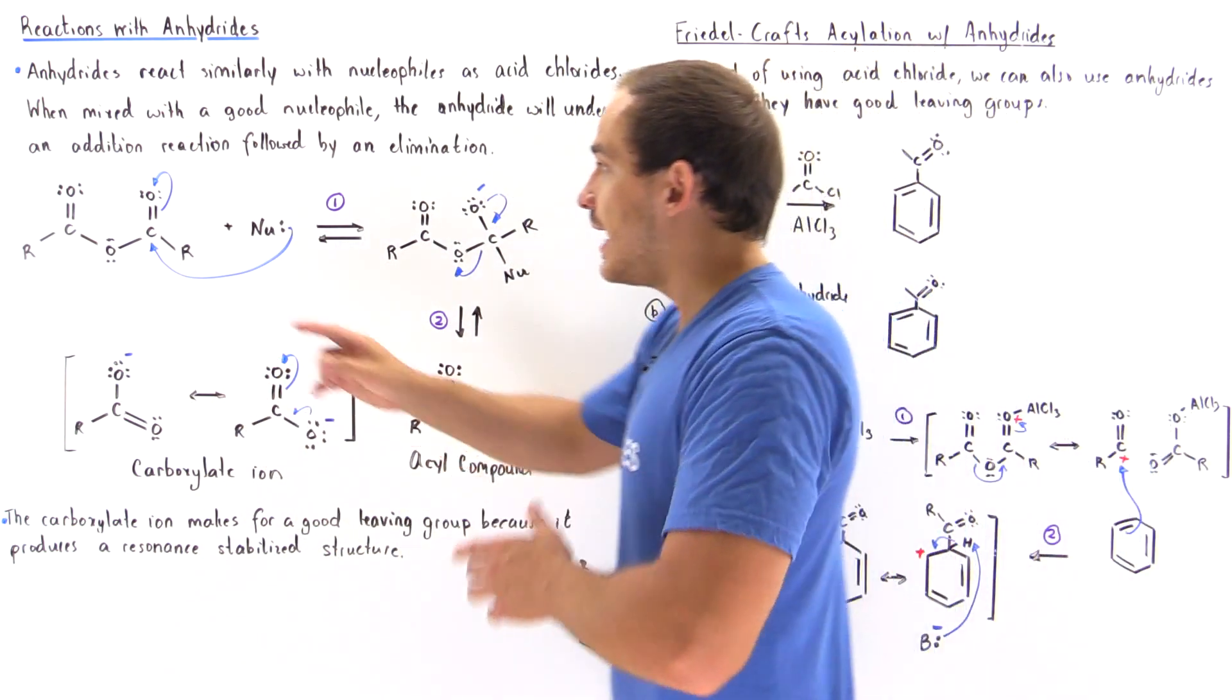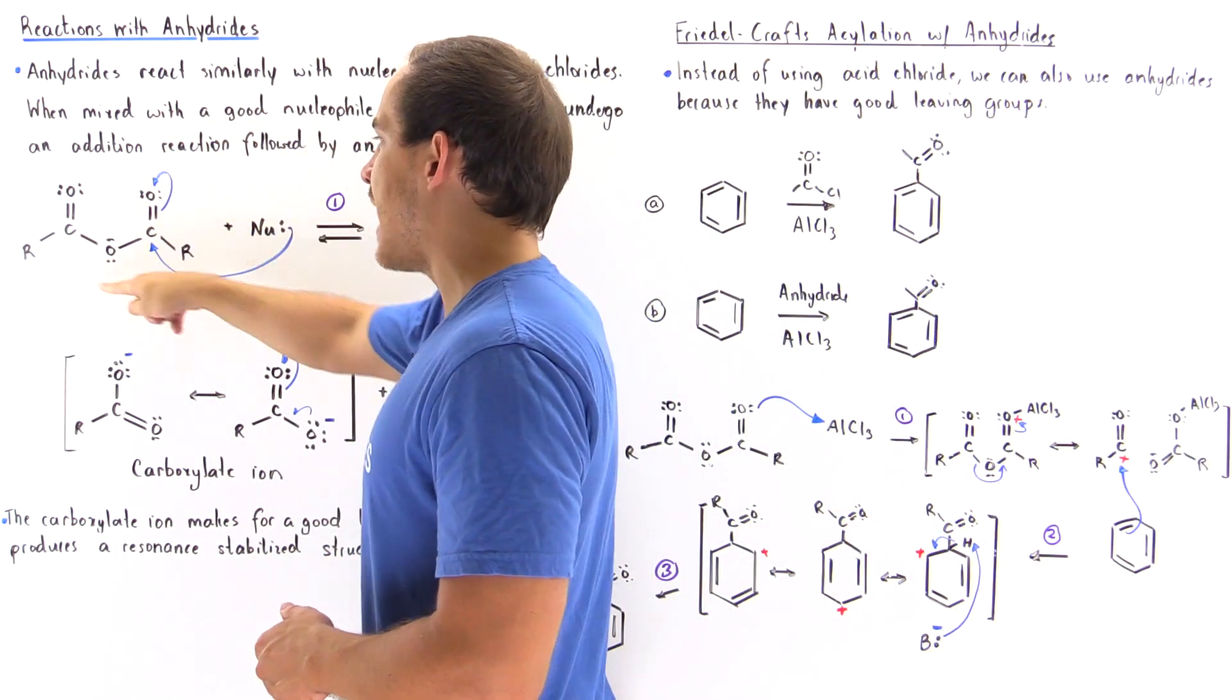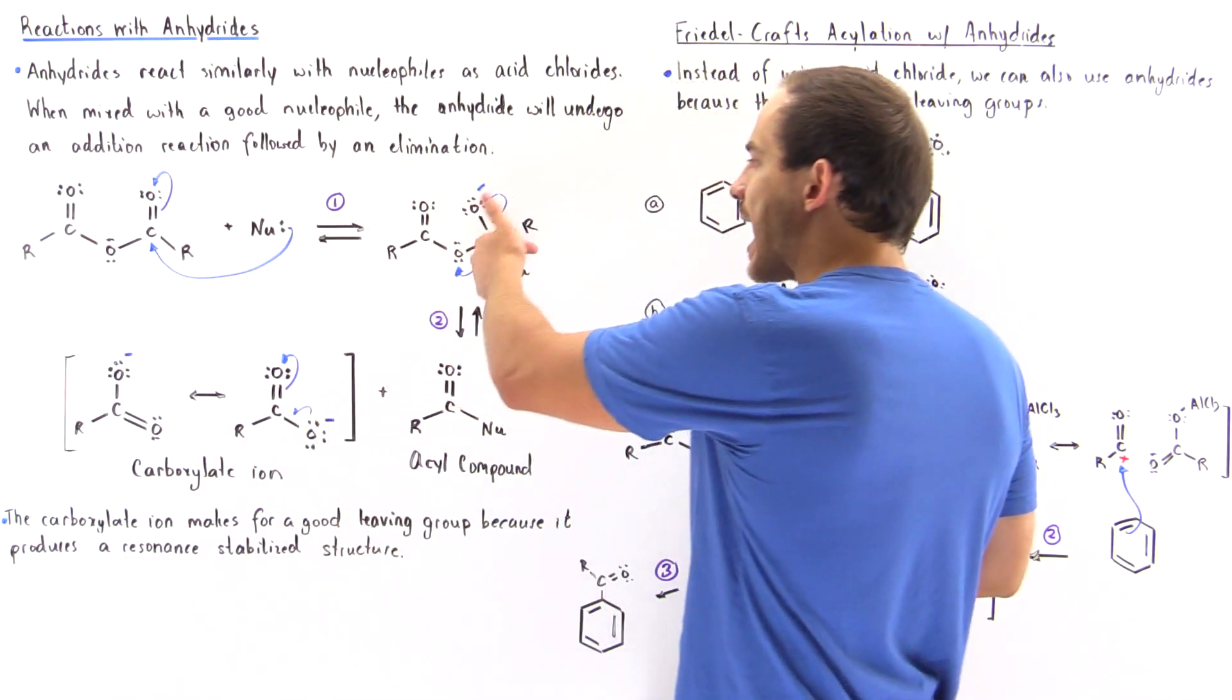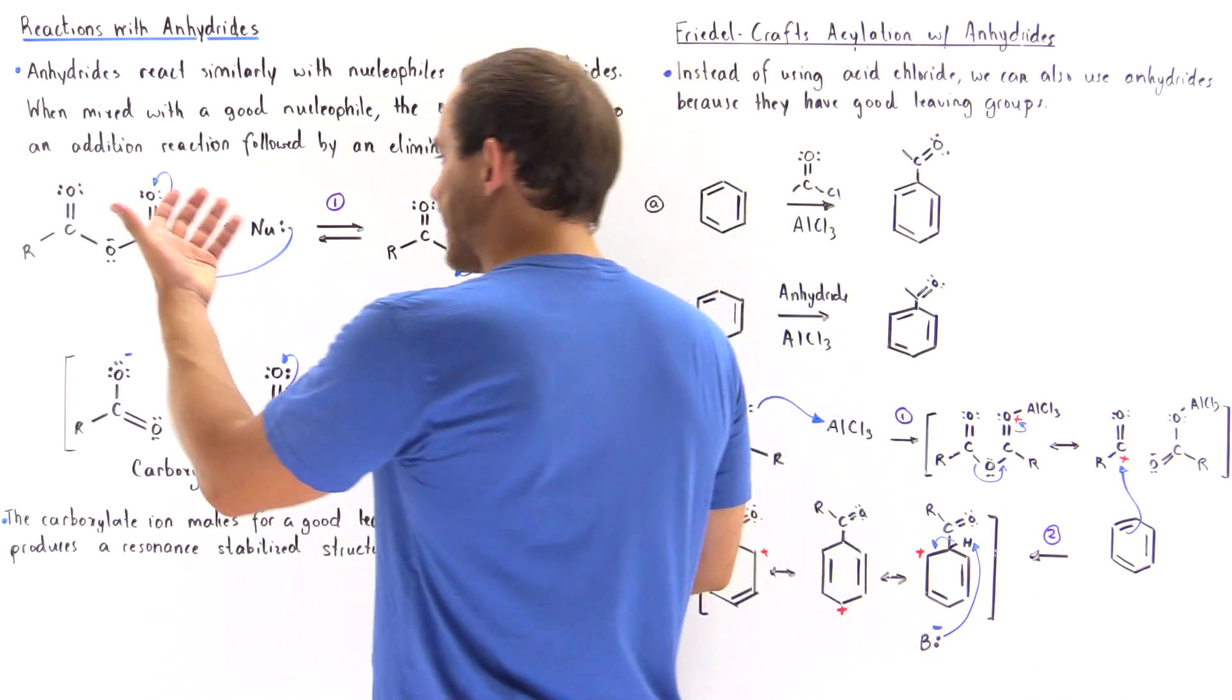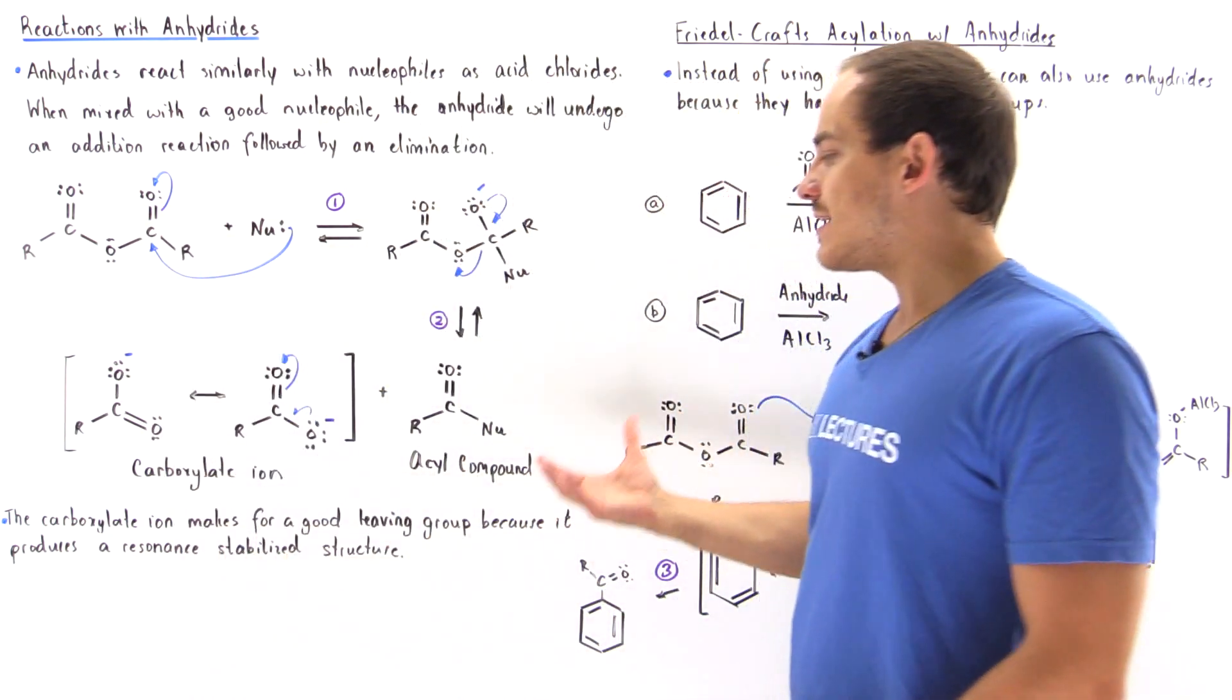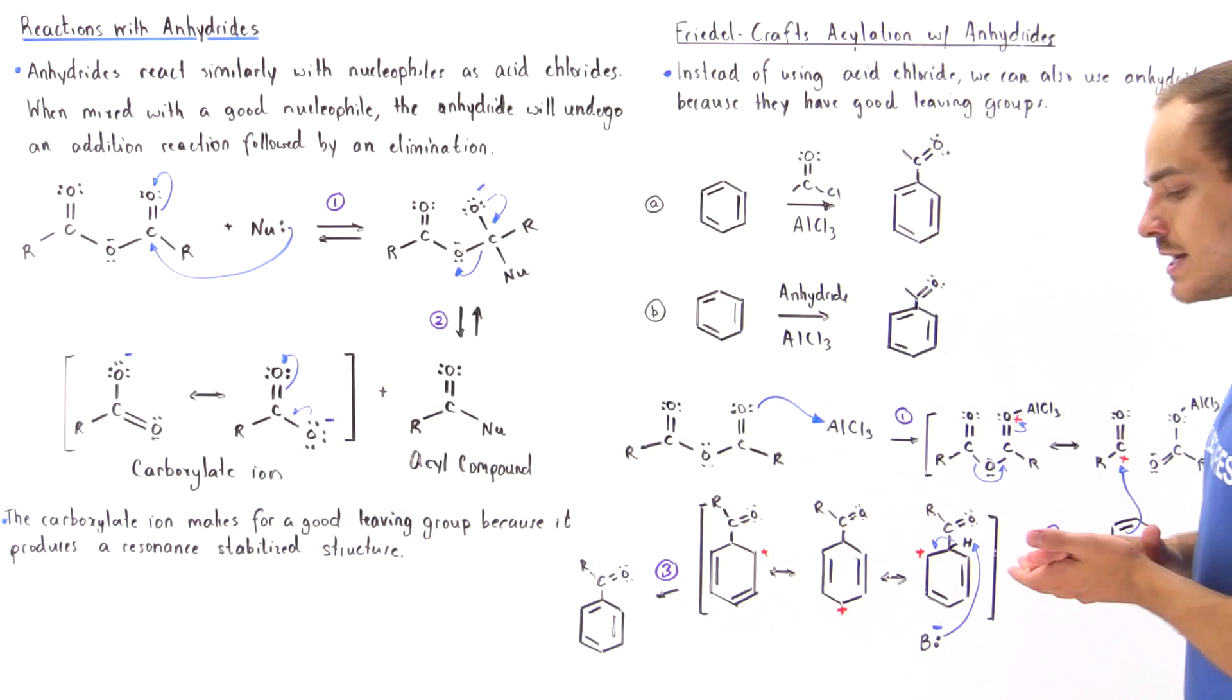in which instead of this carboxylate we had our chloride that acted as our good leaving group. So we transform an anhydride to an acyl compound.